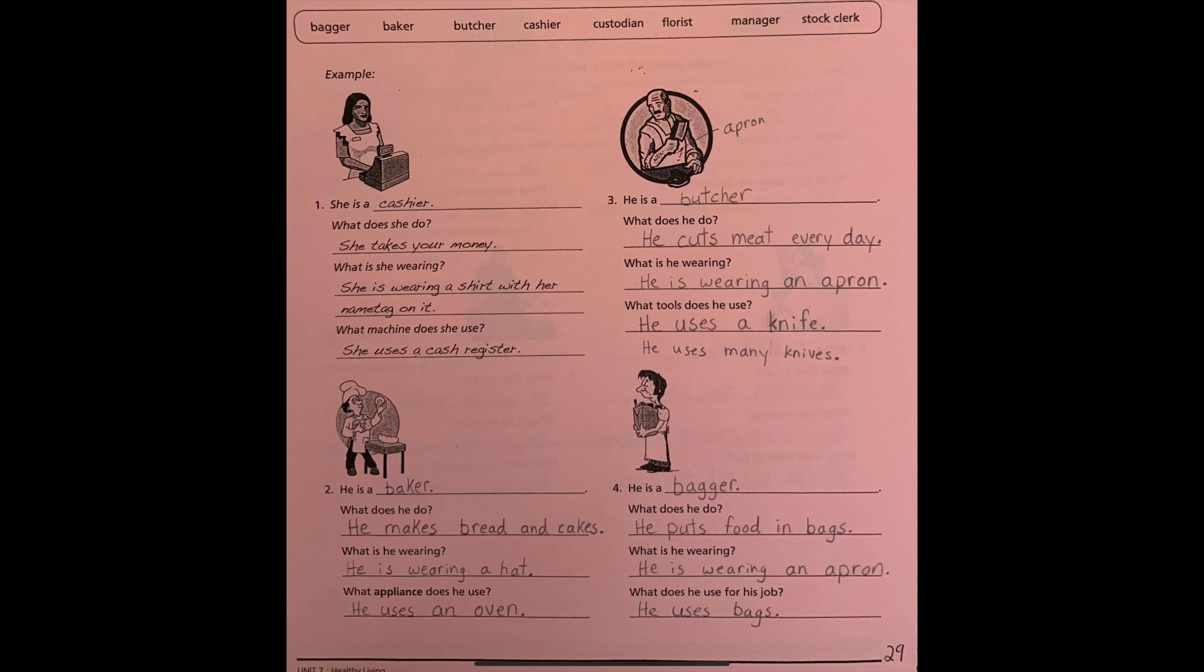Number two. He is a baker. What does he do? He makes bread and cakes. What is he wearing? He is wearing a hat.